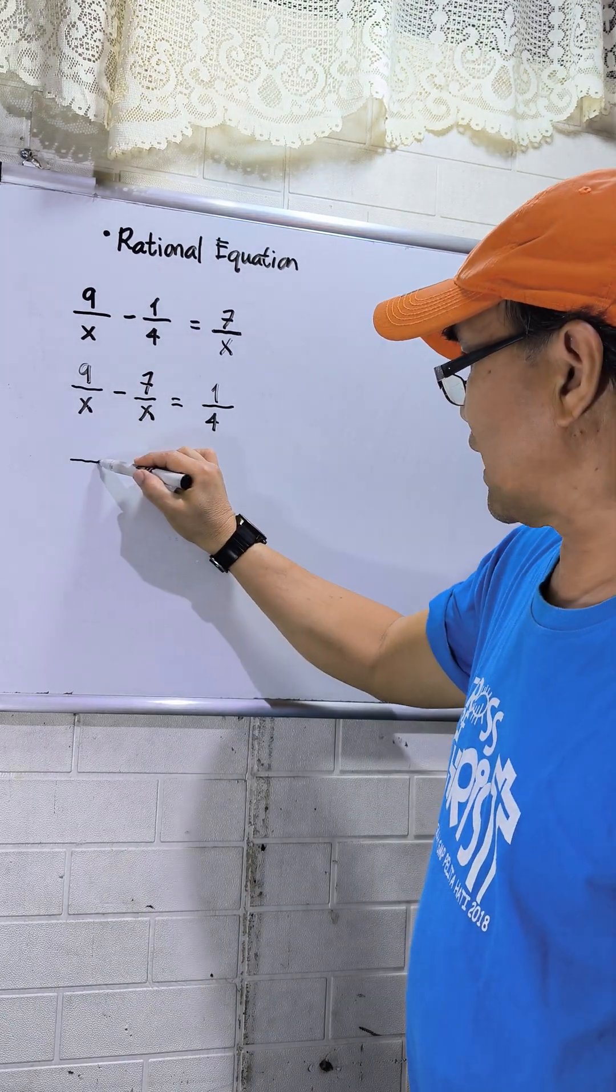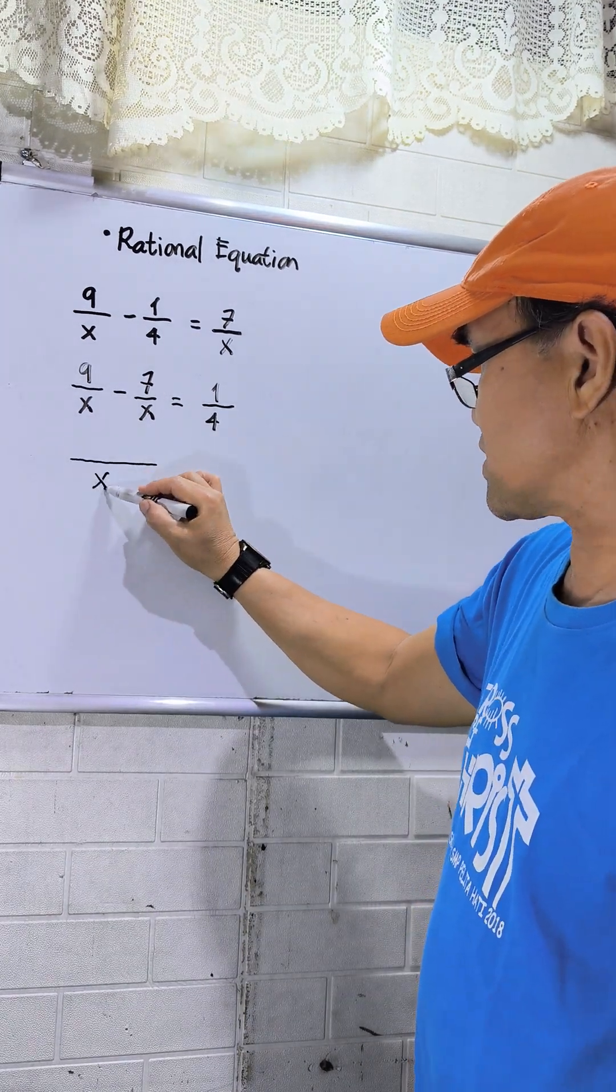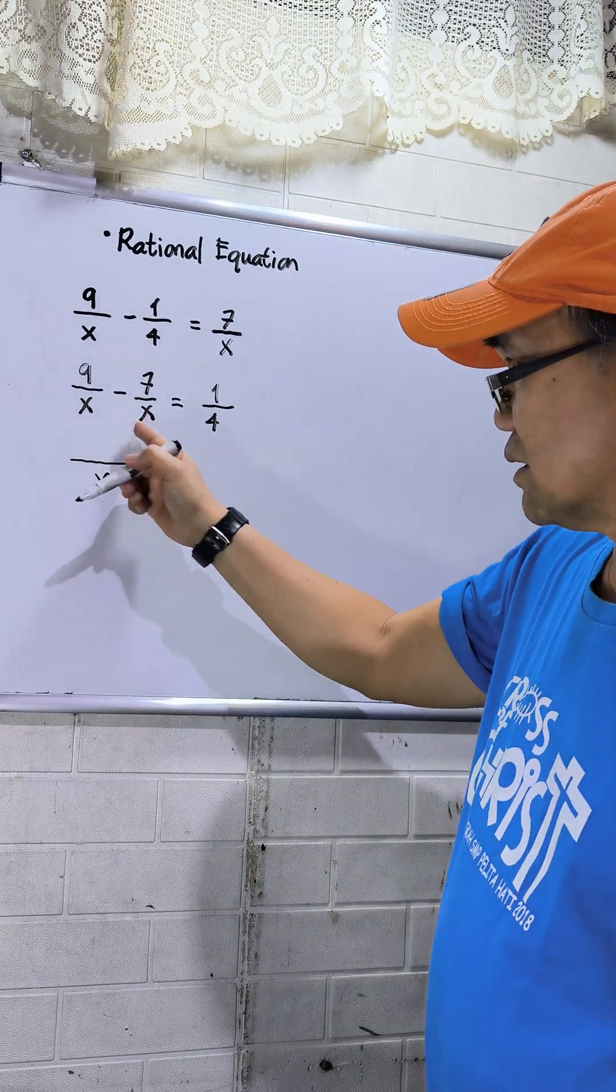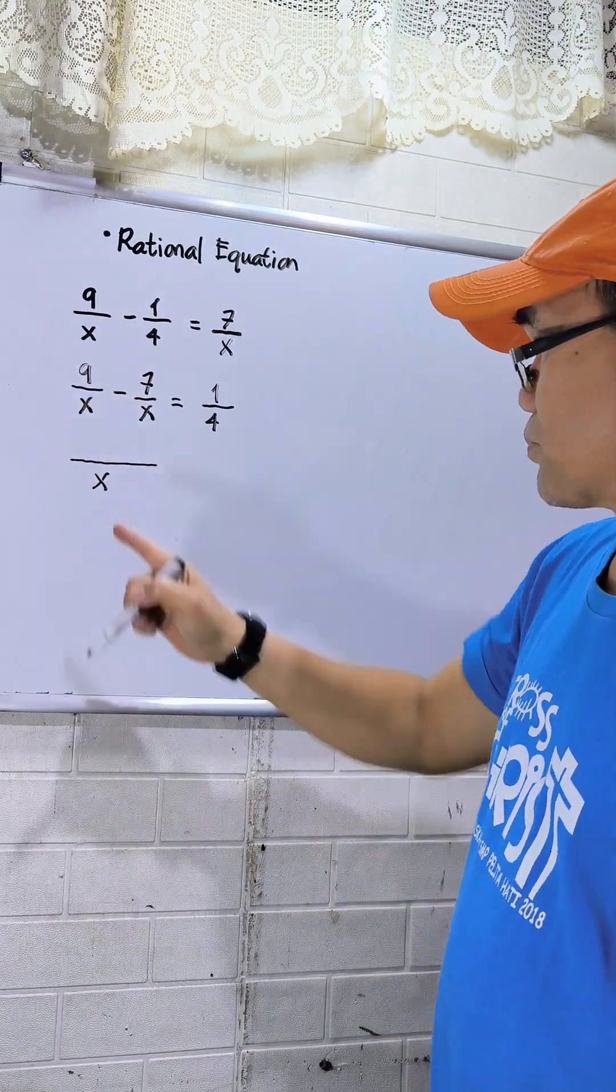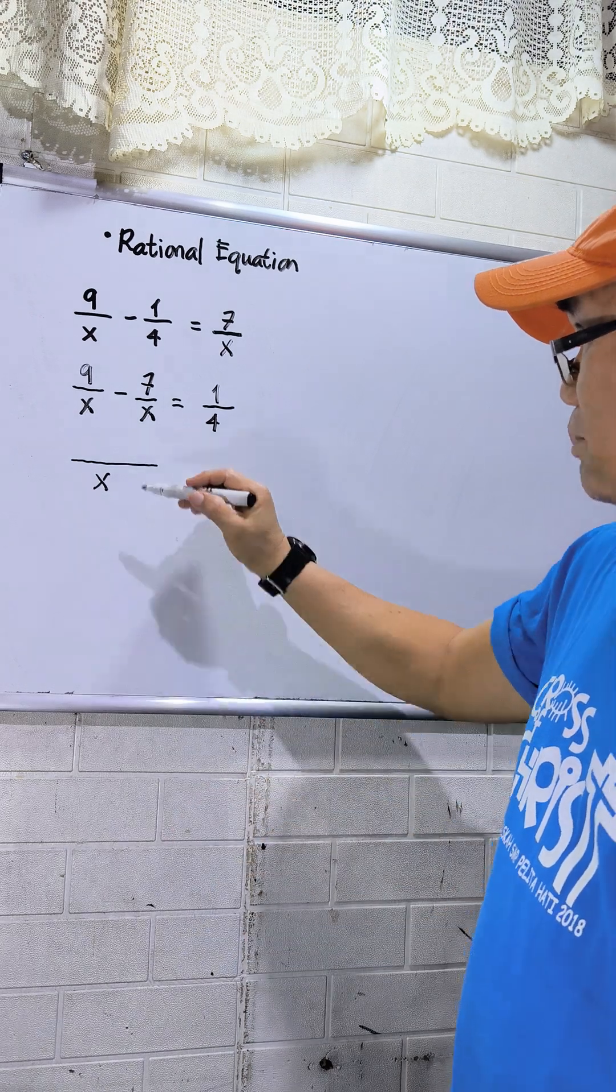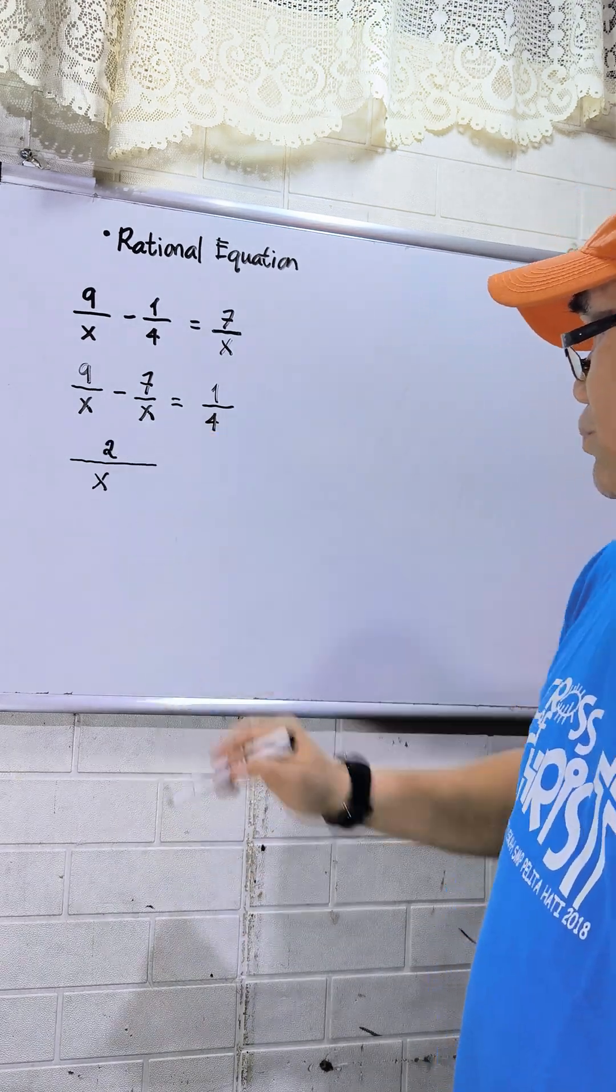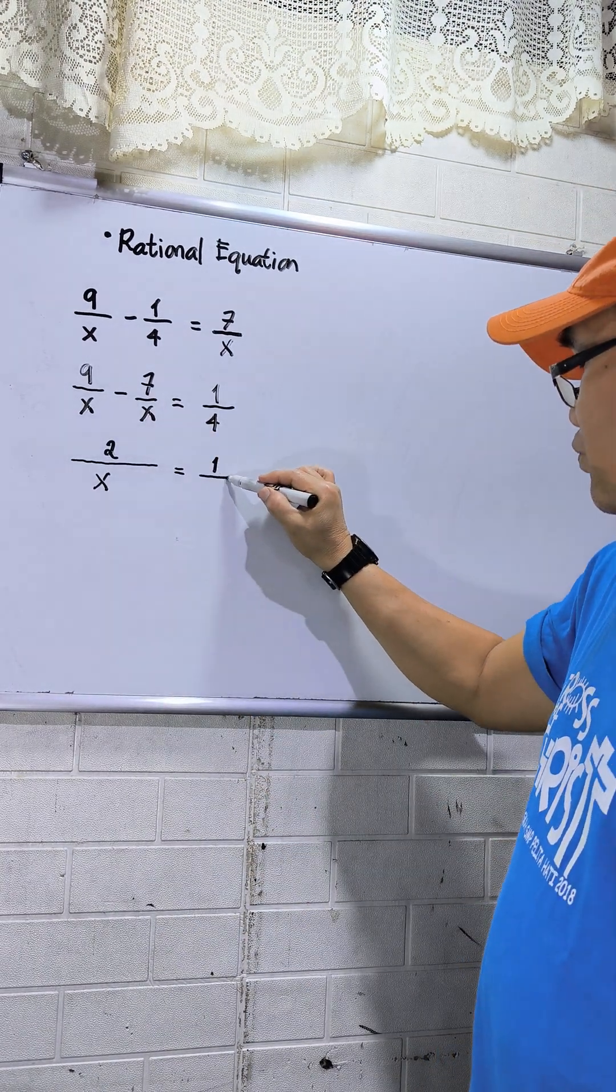Then LCD at the left side, so it should be x. And then you can subtract now 9 minus 7, that will be positive 2. Then equals 1 over 4.